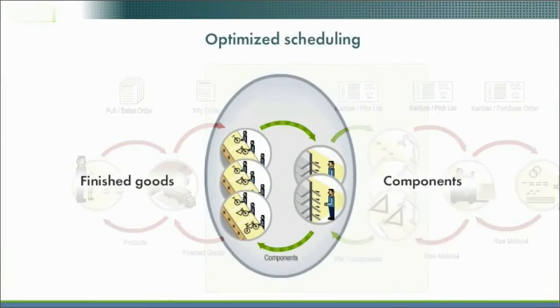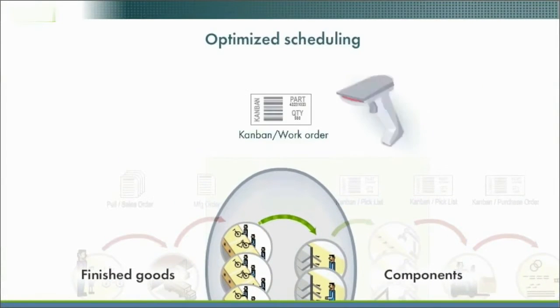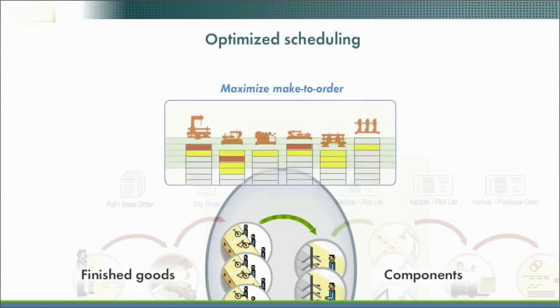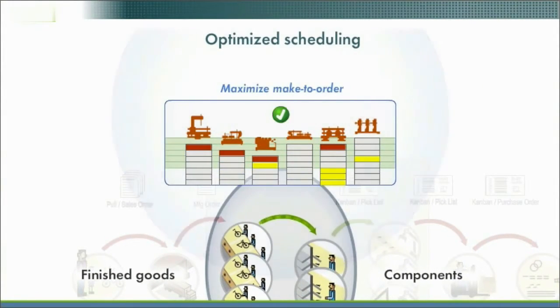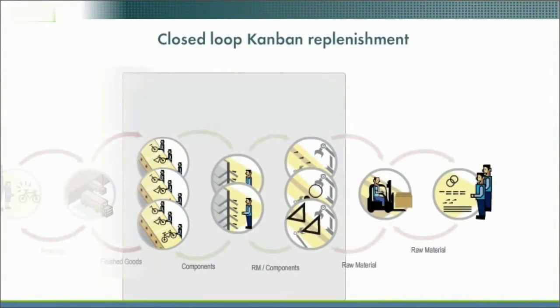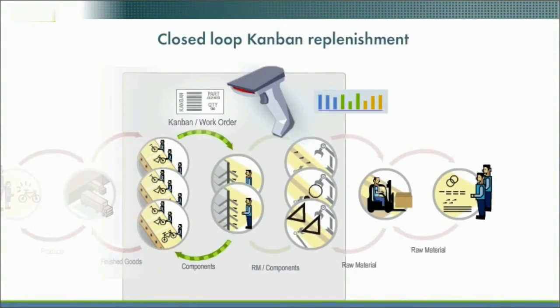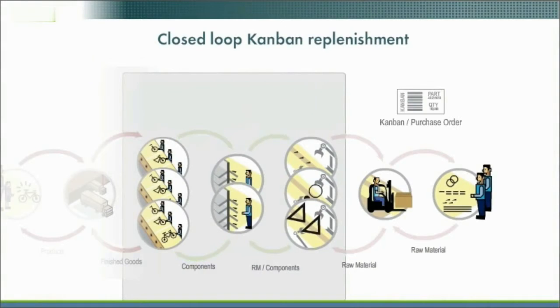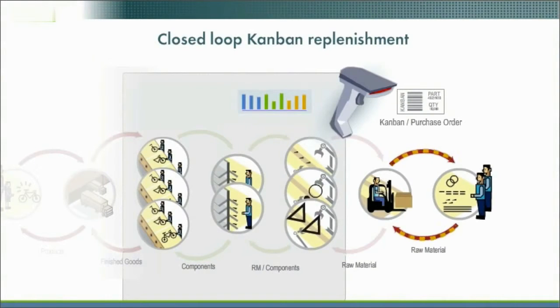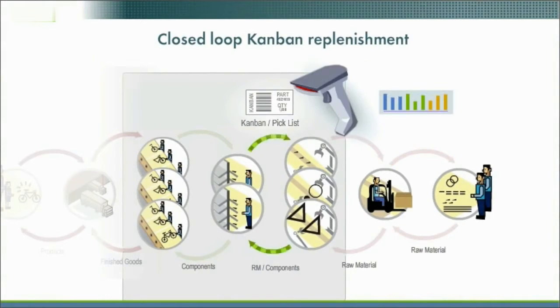Scheduling within the plant maximizes make-to-order and minimizes make-to-stock. Closed-loop Kanban replenishment with real-time analytics handles temporary spikes and seasonality.